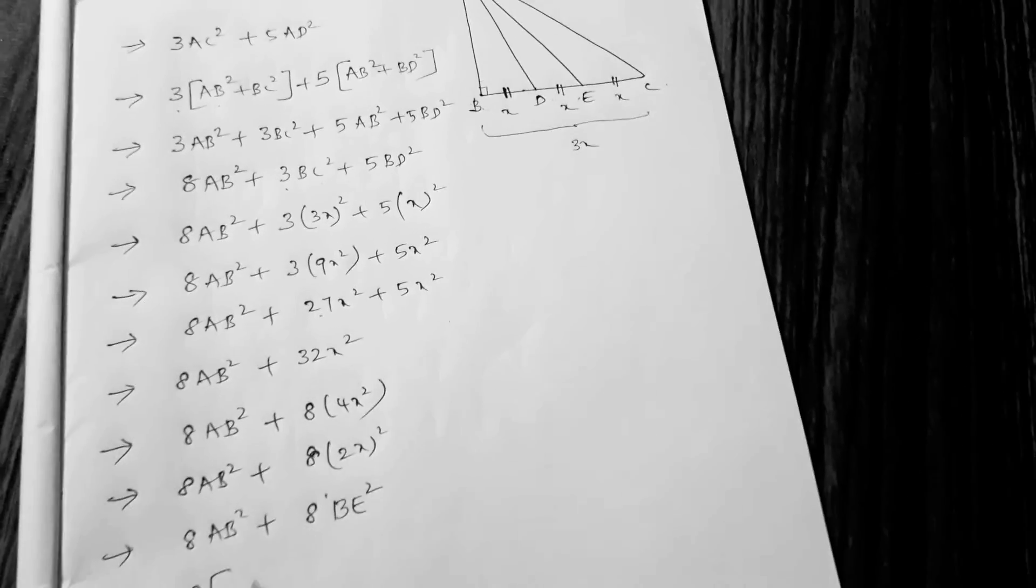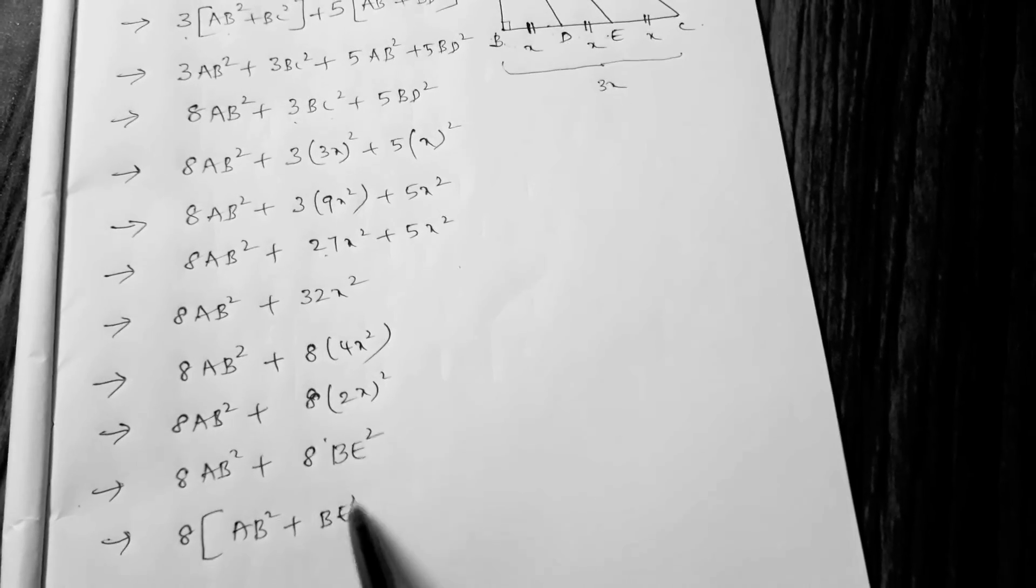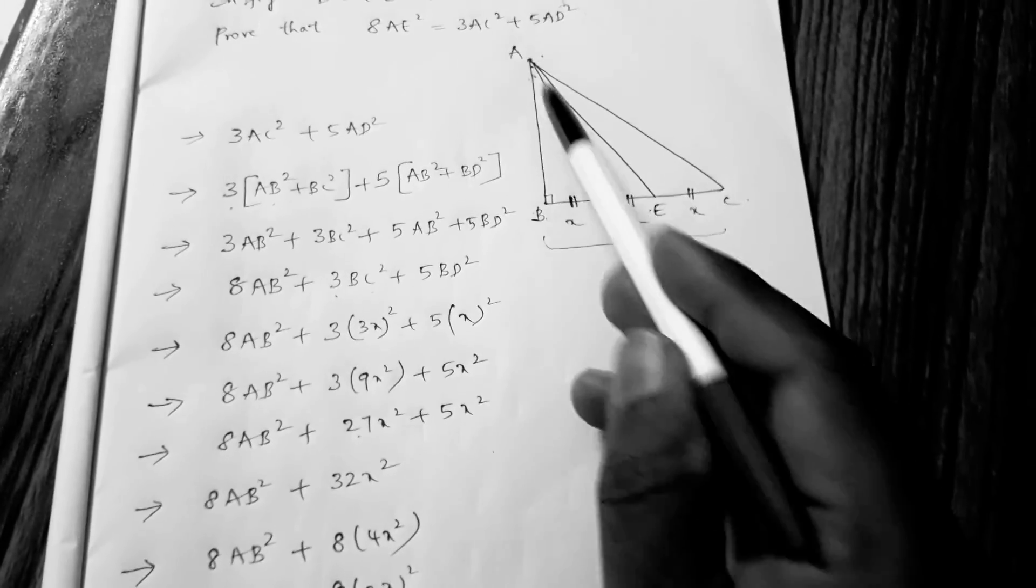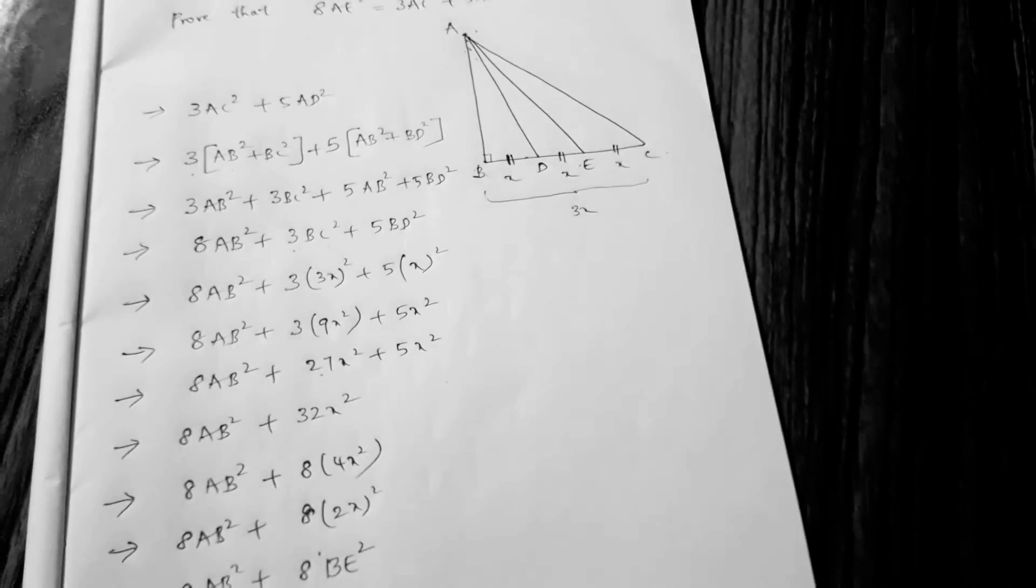If I take 8 common, AB² plus BE². So here, 8 times (AB² plus BE²) is nothing but AE².